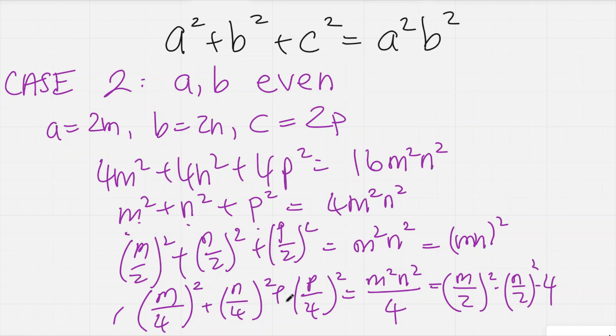So again, I can keep dividing these by 2, and this process is never going to stop. So by infinite descent, this would mean that I have infinitely many solutions, but that's not possible.